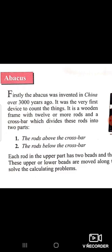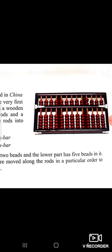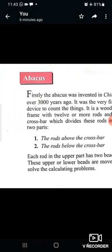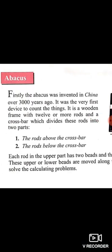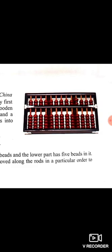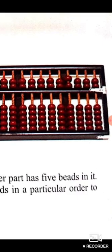The two parts are: number one, the rods above the crossbar, and secondly, the rods below the crossbar.